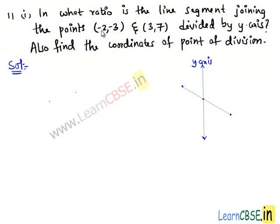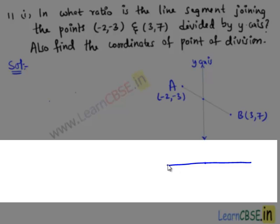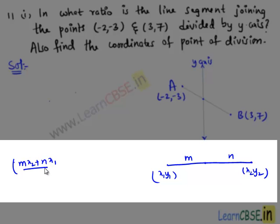Here, we are given with two points, say A and B, and we need to find the ratio in which the line segment joining these two points is divided by the y-axis. We know that the coordinates of the point which divides the line segment joining two points (x1, y1) and (x2, y2) in the ratio m:n internally is given by (mx2 + nx1)/(m+n), (my2 + ny1)/(m+n).